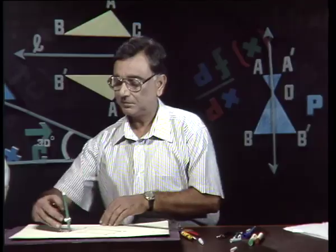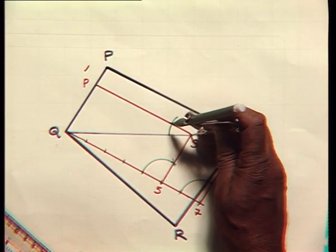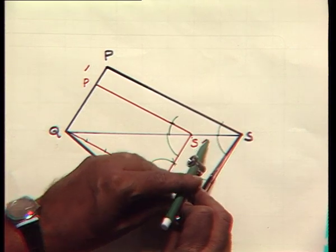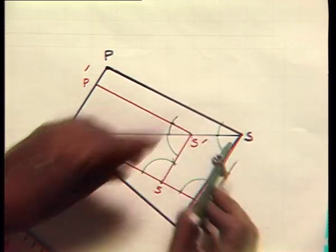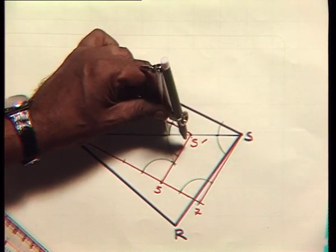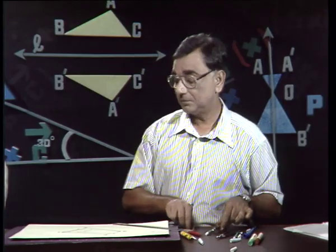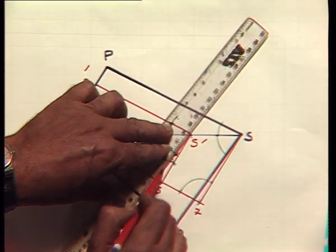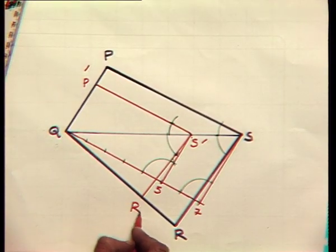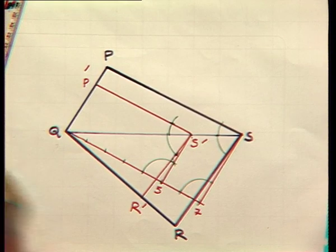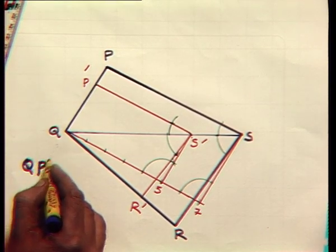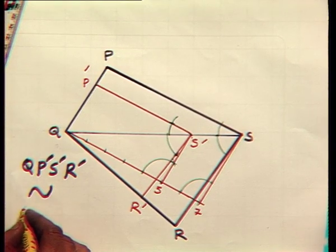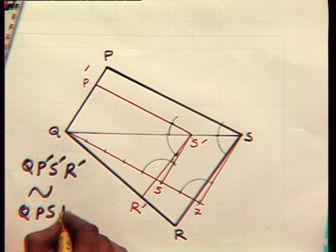This is a point where the arcs are cutting. Let us name this point as R dash. So here the quadrilateral Q, P dash, S dash, R dash is similar to the quadrilateral Q, P, S and R.